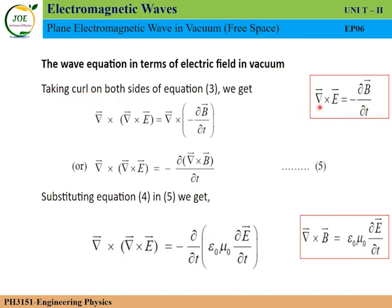Taking del cross of del cross E equals del cross of minus dou B by dou t. Applying the del cross operator, this becomes del cross del cross E equals minus dou by dou t of del cross B. This is the fifth equation. Now substituting equation 4 into equation 5.